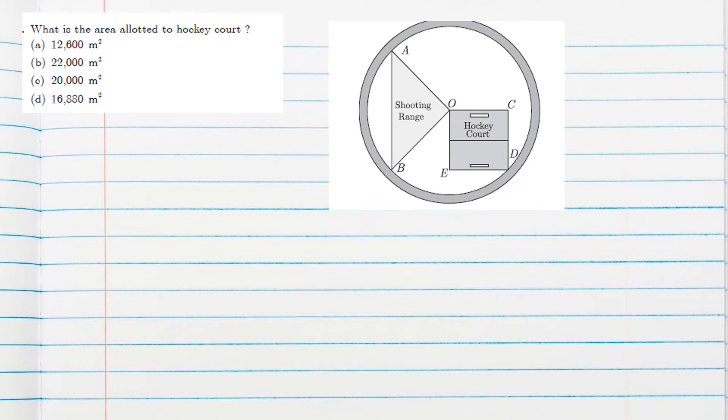Next question is what is the area allotted to hockey court? Clearly hockey court is a square shape and nothing is given. We know area of square is side square. So here ED, any one side if we know, since all four sides are equal, we can find the area of the square. So for that we have to draw OD. Why? Because OD is diagonal as well as OD is radius also.